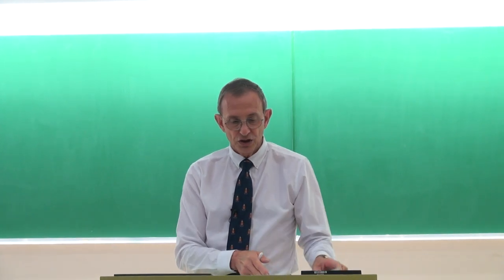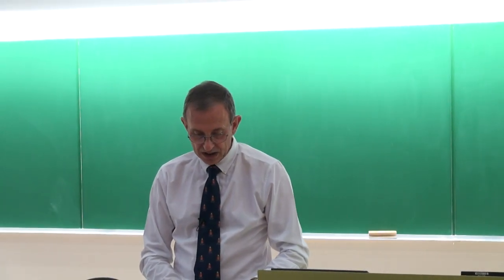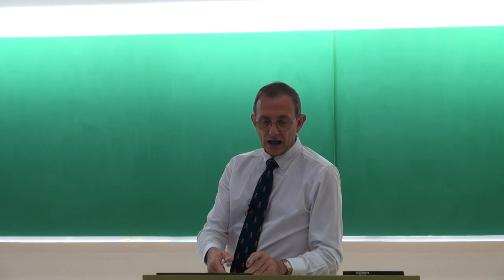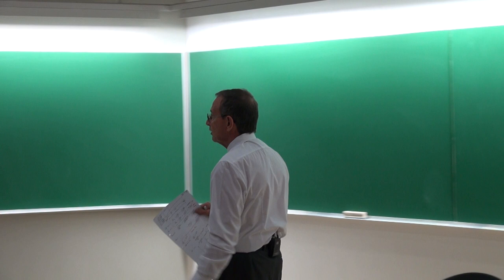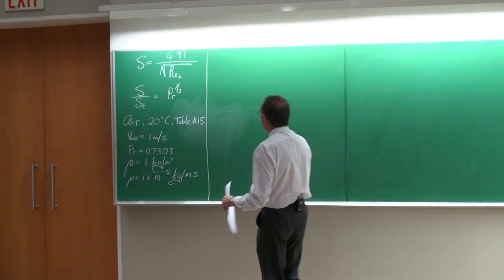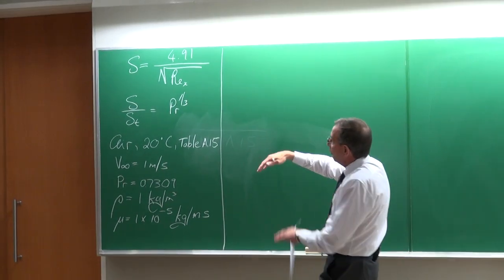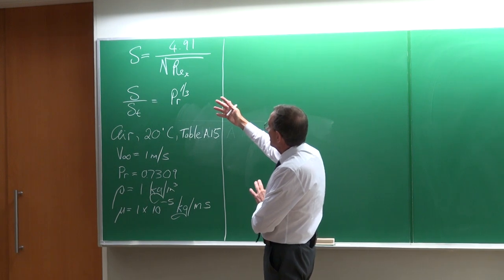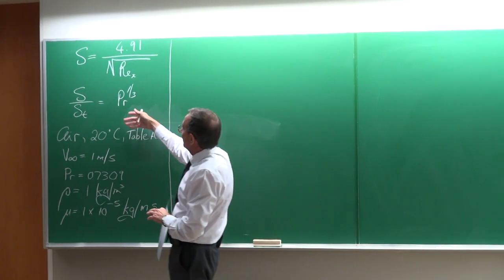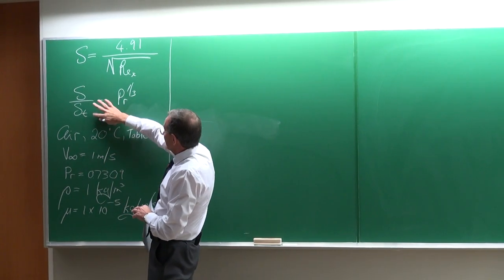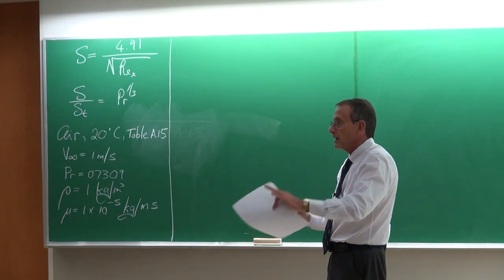Ladies and gentlemen, let's continue with our module in heat transfer. We are busy with chapter 6 on internal forced convection. In the previous lecture, I showed you very quickly, without going into too much detail, how this equation was derived — a very well-known fluid mechanics equation derived almost from first principles, which gives us the thickness of the velocity boundary layer. There was also an equation for the thermal boundary layer, connecting it to the Prandtl number, which we've also discussed.